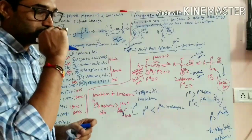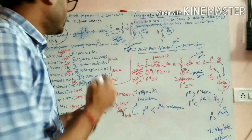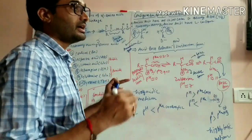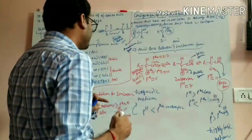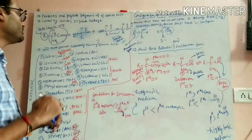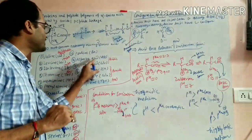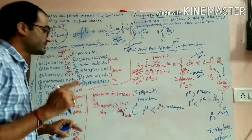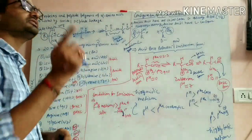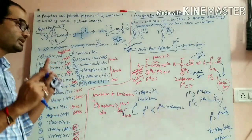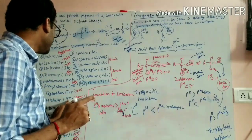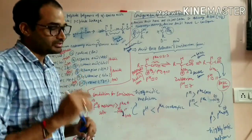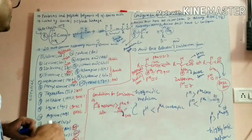If an extra COOH group is present in the side chain, those amino acids are called acidic amino acids. Examples are aspartic acid (ASP) and glutamic acid (GLU). If an extra NH2 group is present in the side chain, those amino acids are called basic amino acids, such as histidine (HIS), lysine (LYS), and arginine (ARG).